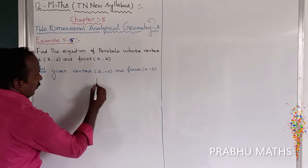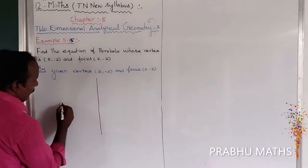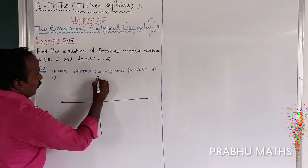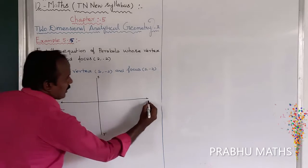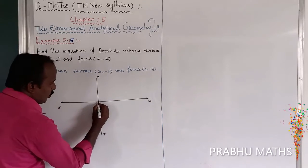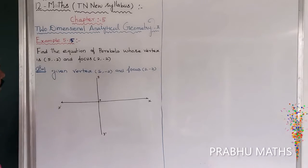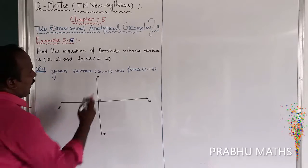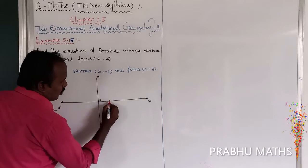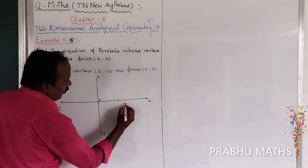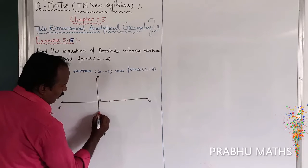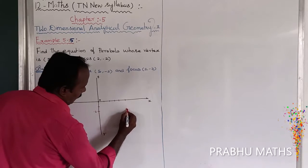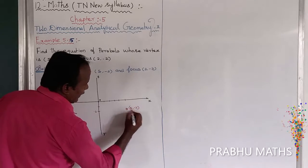First, draw the diagram with the Y-axis, X-axis, Y-dash, and X-dash, with origin at 0. The vertex is at (5, -2) — counting 1, 2, 3, 4, 5 along x and -2 along y. That point (5, -2) is the vertex point.